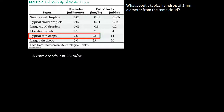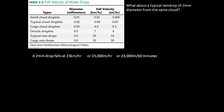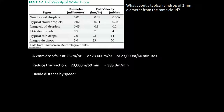Well, same process. A 2 millimeter drop falls at 23 kilometers per hour, or 23,000 meters per hour, or 23,000 meters per 60 minutes. So again, we reduce the fraction: 23,000 meters in 60 minutes can be expressed as 383.3 meters per minute, simply dividing 23,000 by 60. Then we divide the distance the droplet is falling — 2,000 meters — by 383.3 meters per minute, and we get 5.2 minutes for a 2 millimeter droplet to fall from the cloud to the Earth.